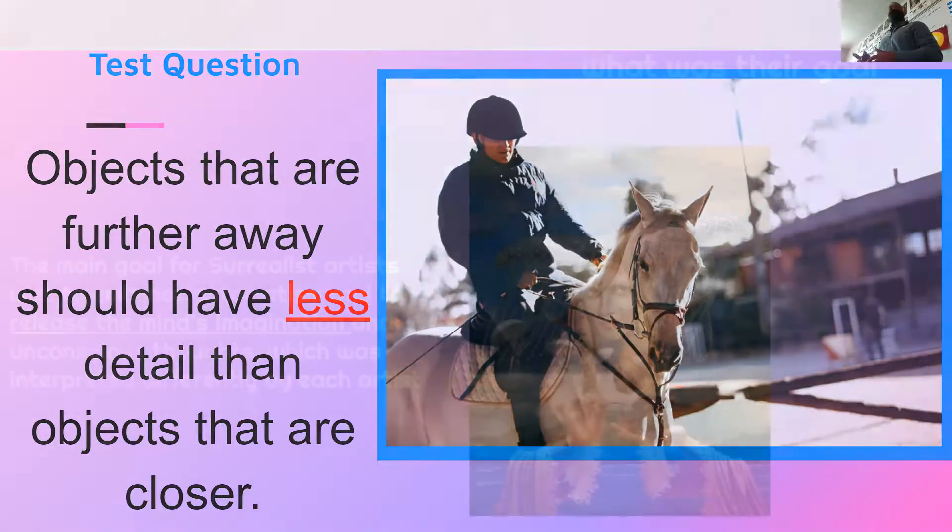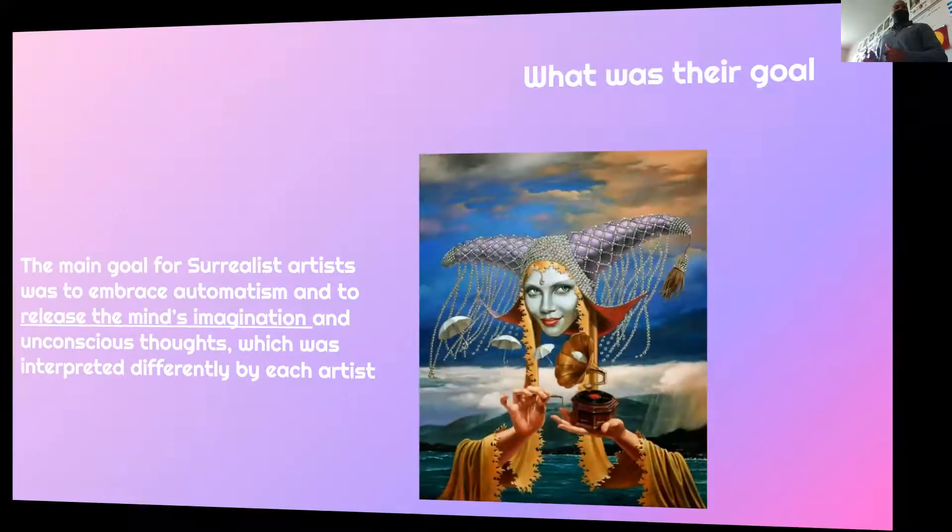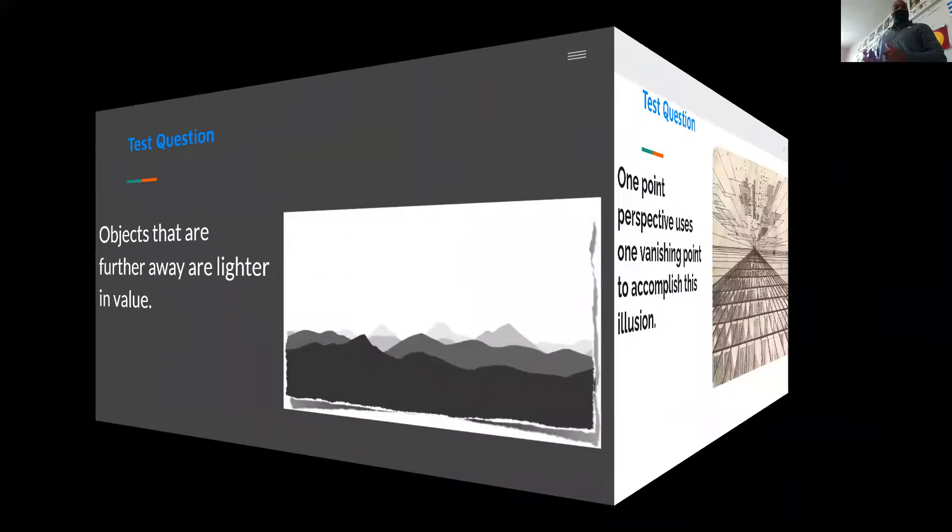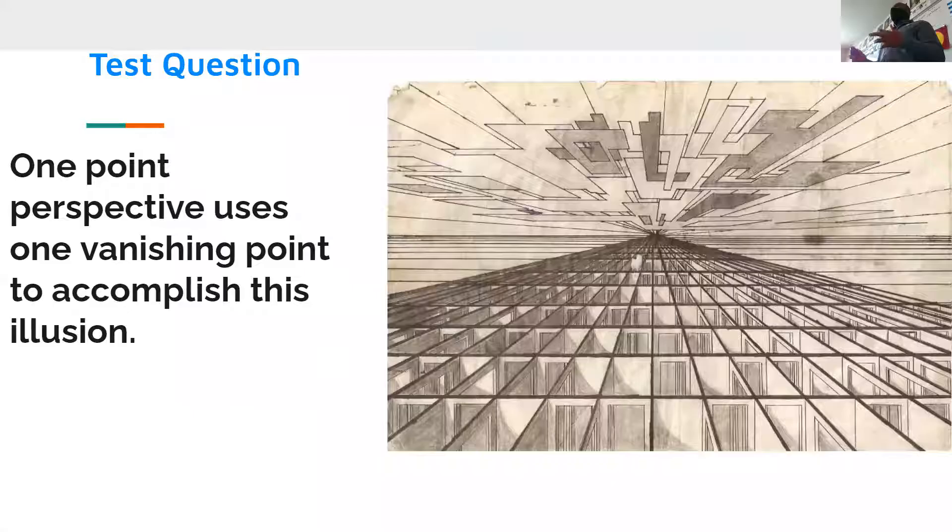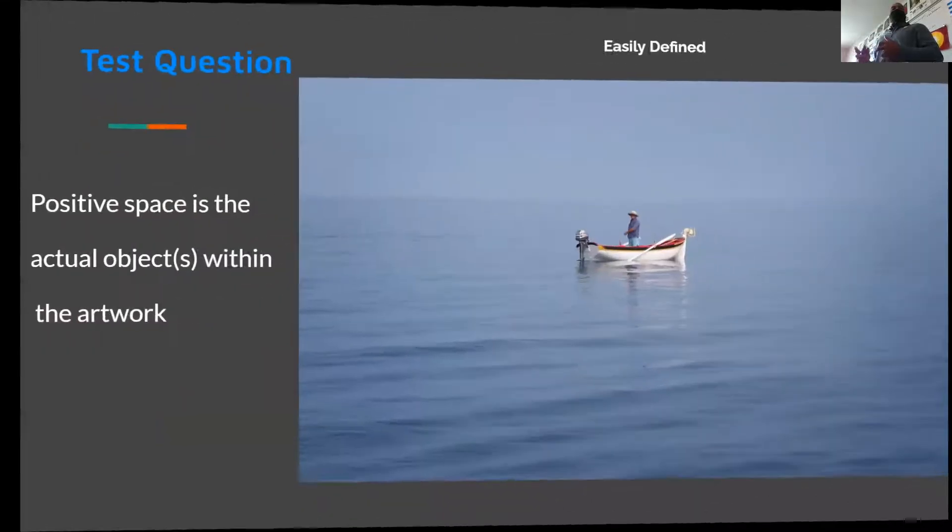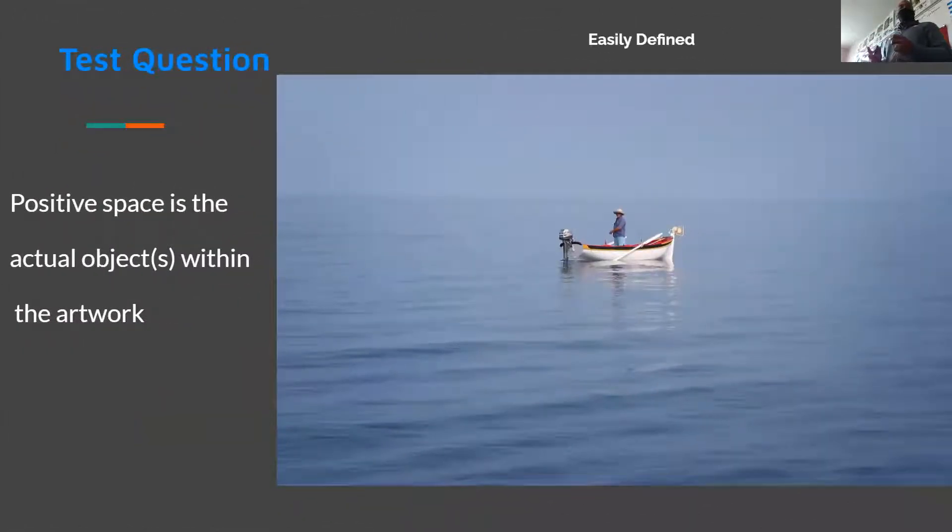Complementary colors are straight across from each other. The only three relationships you need to know are right here: yellow to purple, blue to orange, and red to green. Analogous colors are four colors that are next to each other on the color wheel. Here are the warm colors and the cool colors.